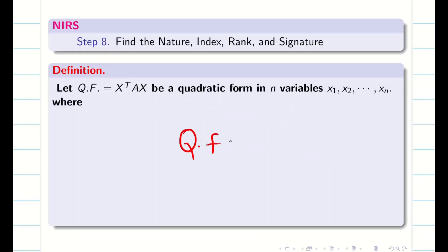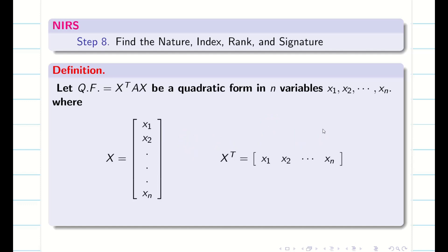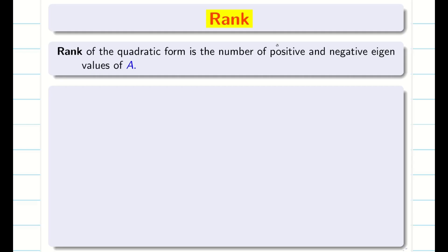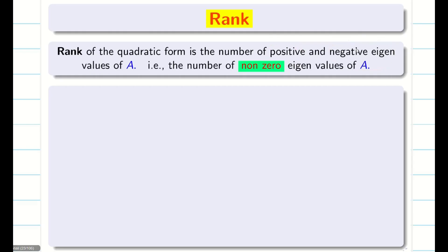The quadratic form given to us is x-transpose A x, where x has n variables, x-transpose is represented accordingly, and the matrix A is of order n×n. Now, the rank of the quadratic form is nothing but the number of non-zero eigenvalues of A — that is, we count both positive and negative eigenvalues, excluding zeros.